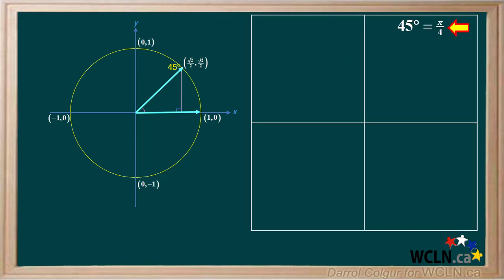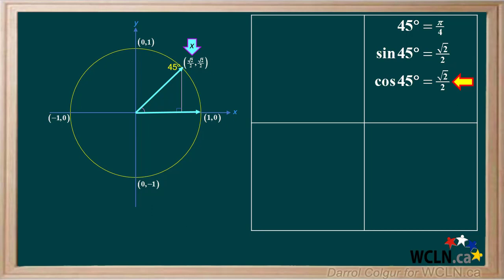Now we'll determine values for this 45-degree angle. 45 degrees is equal to 45 times pi over 180, or pi over 4 radians. The sine of 45 is y over r, which is positive root 2 over 2 over 1, or positive root 2 over 2. The tangent of 45 degrees is y over x, which is positive root 2 over 2 divided by positive root 2 over 2, which equals positive 1. Notice the sine, cosine, and tangent are all positive for this angle — this is the case for all angles in quadrant 1.